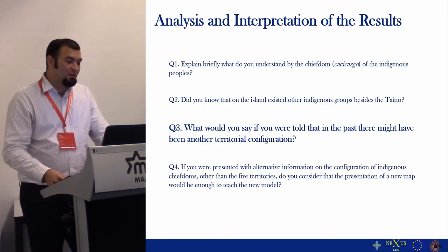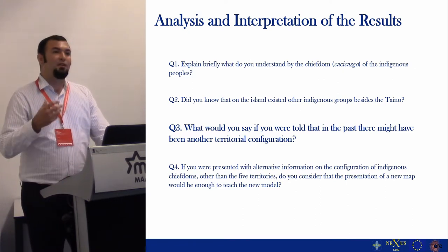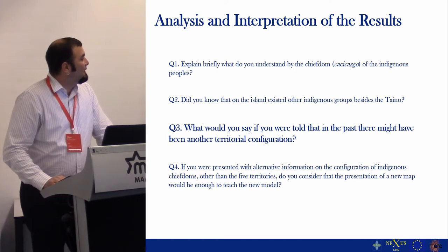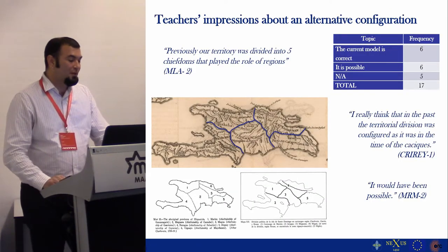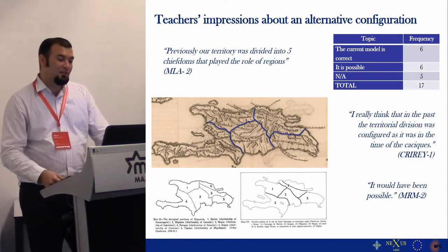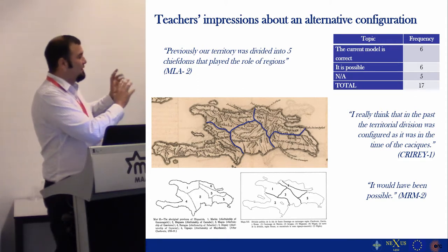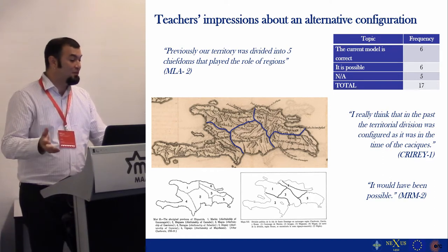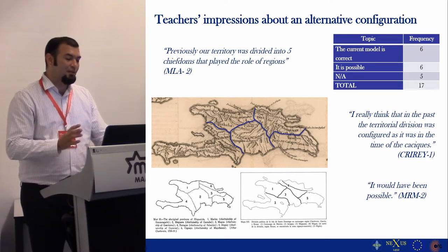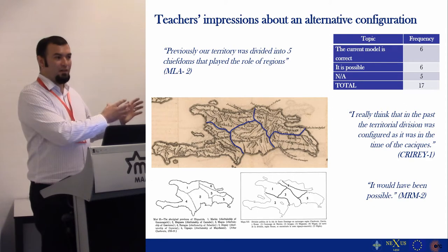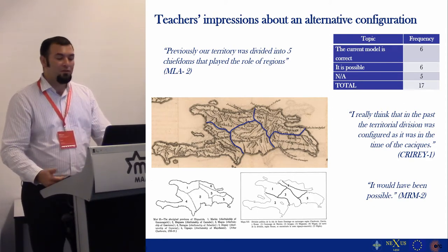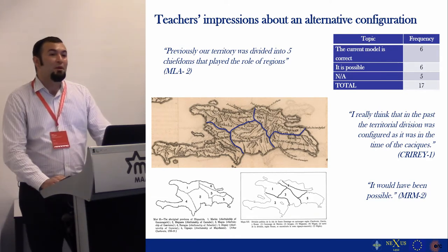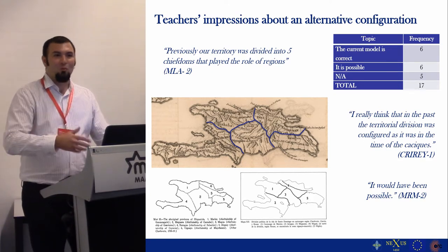We then asked: what would you say if you were told that in the past there might have been another territorial configuration? We were curious whether teachers were open to accepting a new spatial configuration. One-third of teachers said the map and scheme is what it is and doesn't need any changing, with comments such as 'our territory was divided into five chieftains that played the role of regions.' Another one-third gave very vague answers like 'it would have been possible,' and the final one-third didn't answer at all.